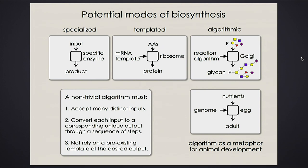A slightly more complicated way: the enzyme is the ribosome. The ribosome can take any number of basic amino acids and a different template sequence from the RNA — depending on what template you feed in, it makes a different product from the same substrates. You can think of the Golgi apparatus making glycans from building blocks in the same way — except the Golgi doesn't have a template.